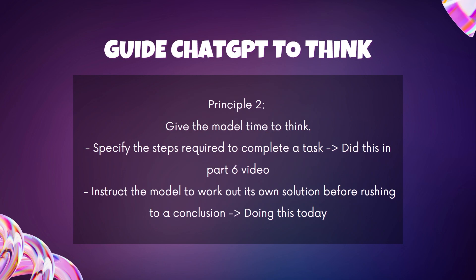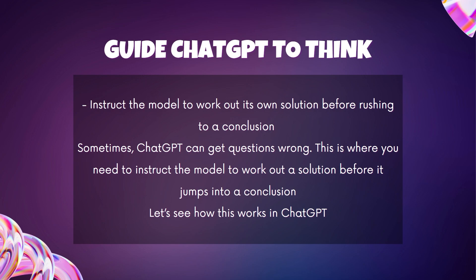Principle 2 is to give the model time to think. In our part 6 video, we learned about specifying the steps required to complete a task — you can go watch that video as well. For today's video, we're going to be going over how you can instruct the model to work out its own solution before rushing into any conclusions. We do this because sometimes ChatGPT can get math questions wrong, and you need to instruct it to work out a solution before jumping to a conclusion. Let's test this out with ChatGPT.